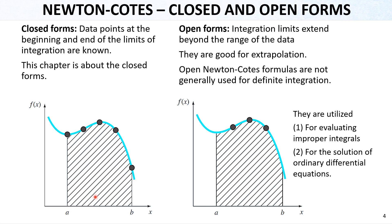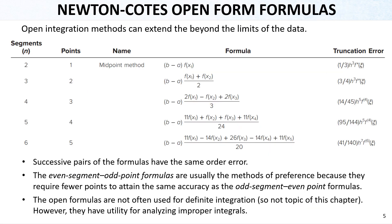As stated, in this chapter we focus on closed-form Newton-Cotes formulations. In the following slides we will quickly present the open-form formulas as a summary, then give the details of the closed-form equations. In this slide you can see the methods and formulas for the open-form methods of Newton-Cotes integration. As mentioned earlier, the open integration methods can extend beyond the limits of the data — the ranges are not known but we have data inside.